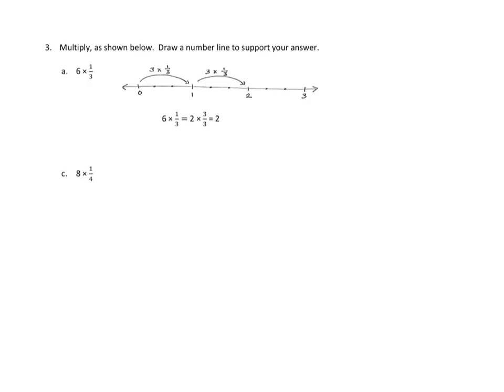So let's take a look at problem C and see if we can do a similar bit of work with this problem. Problem C says 8 times 1 fourth. So we're going to do a number line. We're going to do that number line out this way. We'll do our usual 0, and 1, and 2, and one more, here, 3.